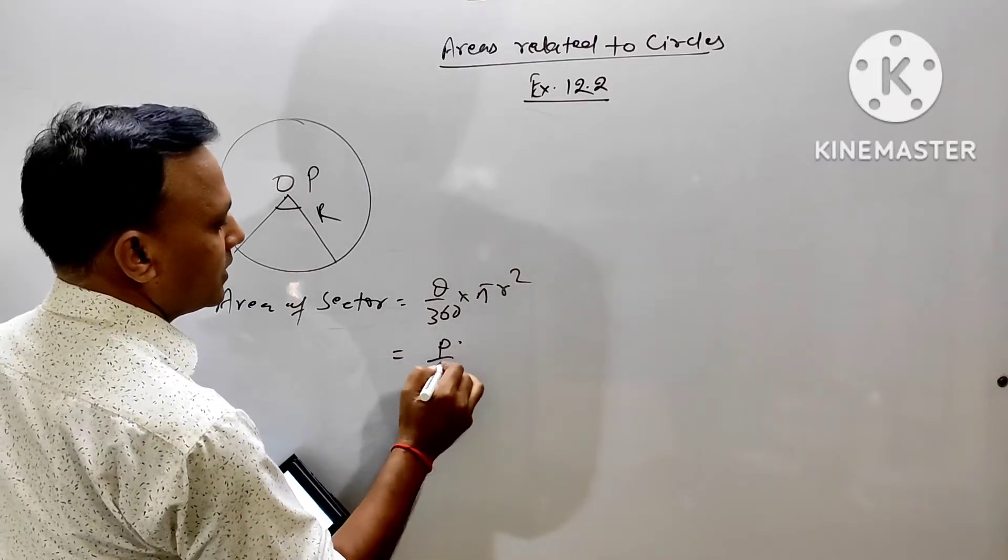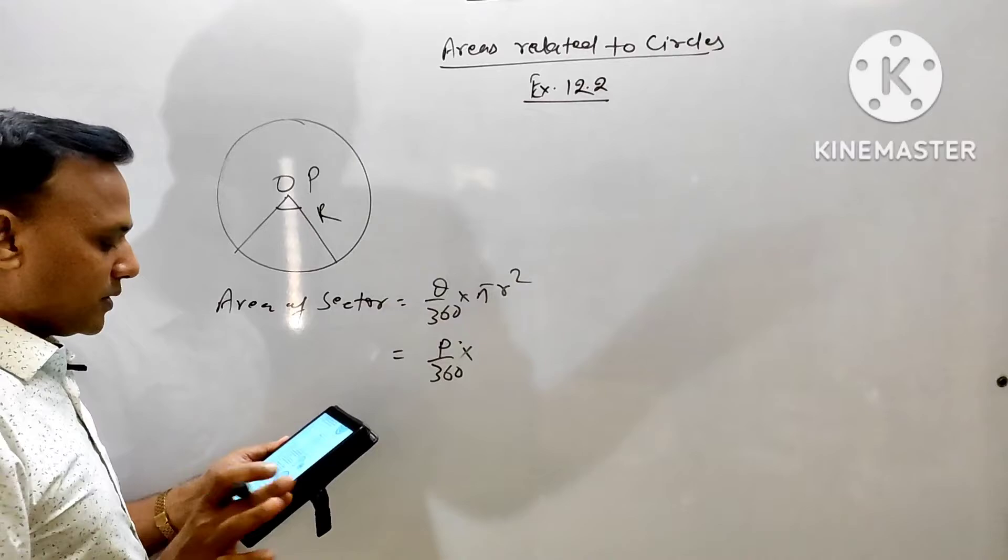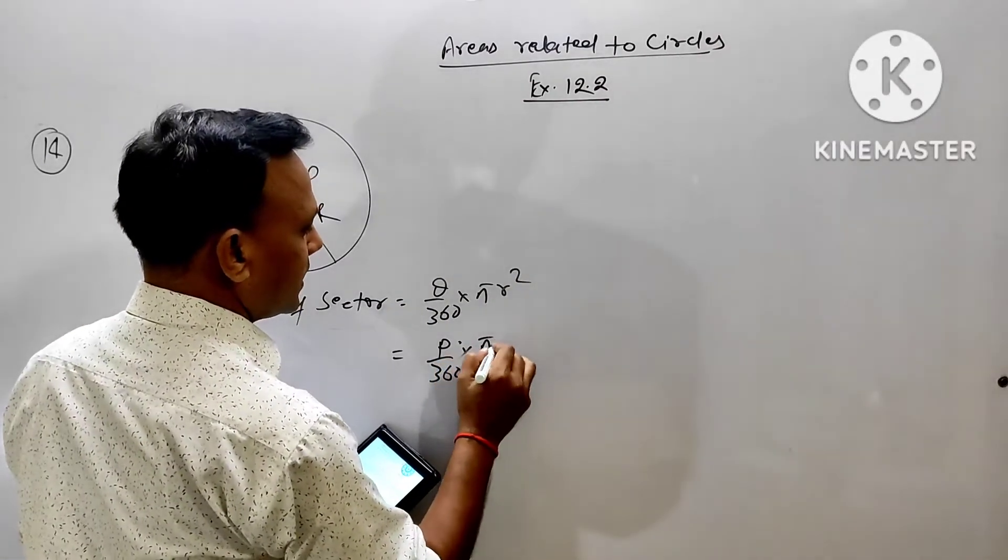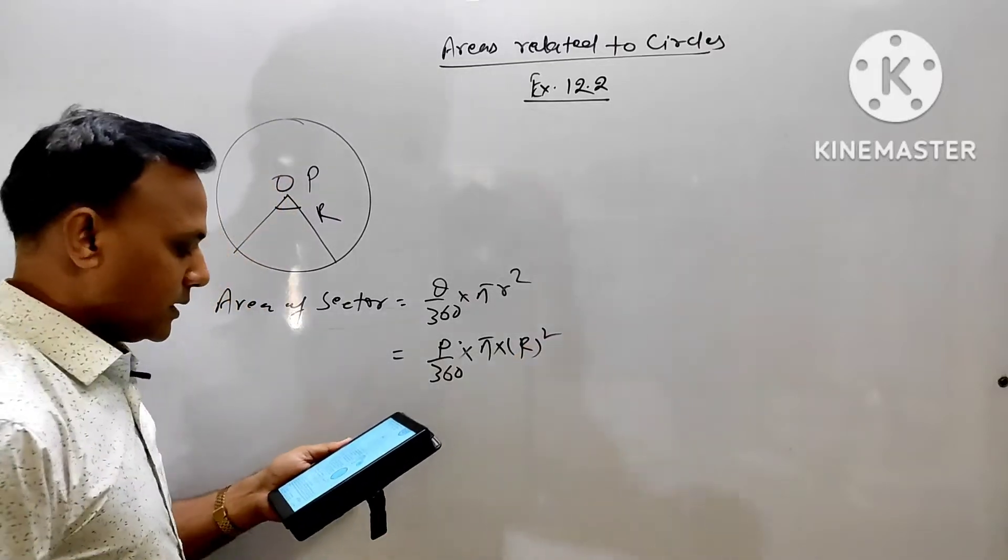So theta here is P upon 360. This is question number 14. Here pi r square means capital R whole square.